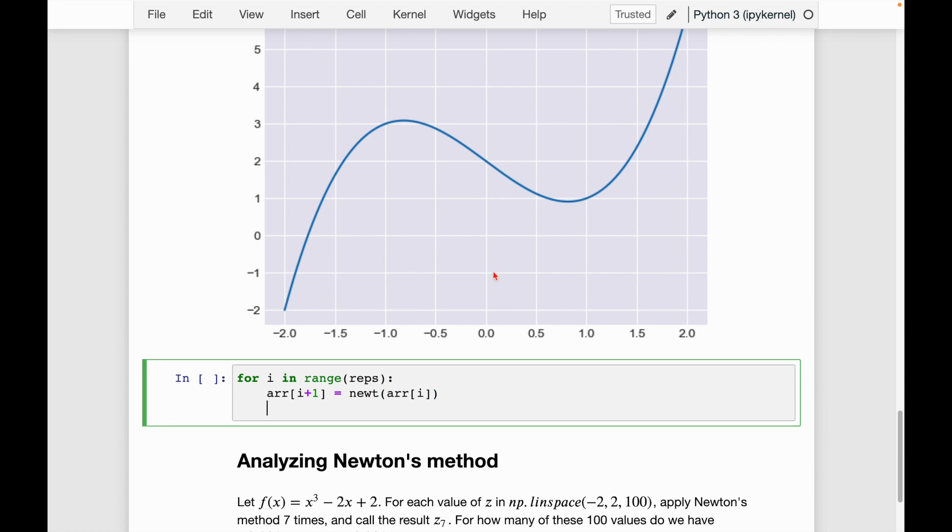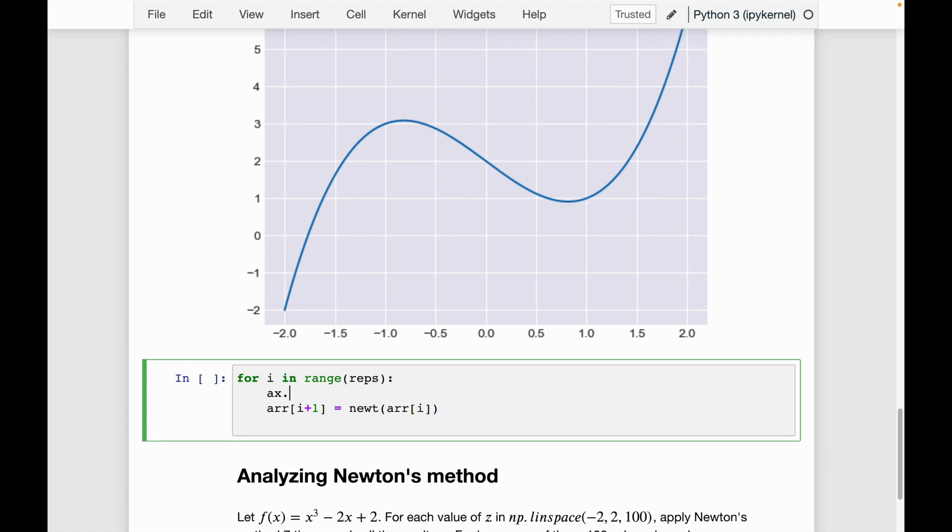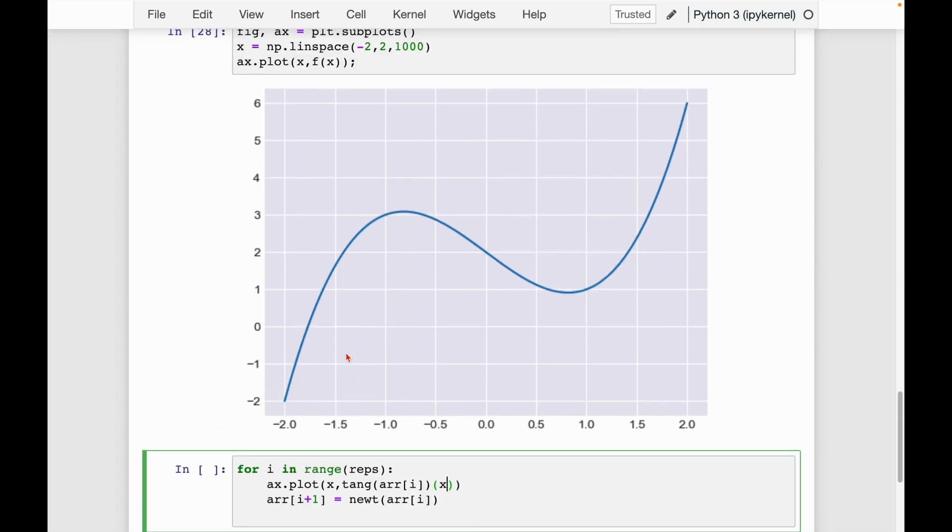And what I'm going to do is within this for loop, I'm going to say, let's have here, ax.plot. So we want the point x comma tangent arr of i. So remember, tangent returns a function, so we want to apply this at x.